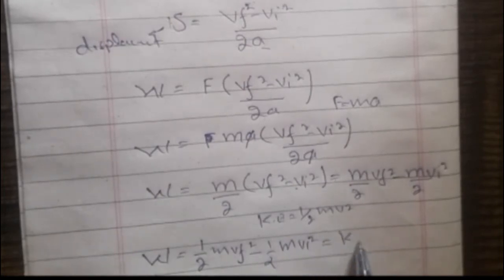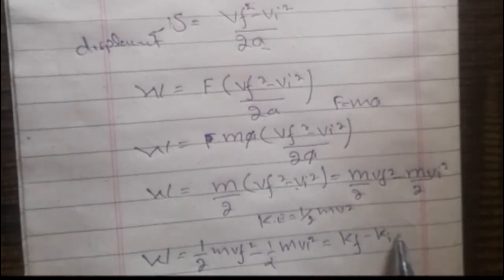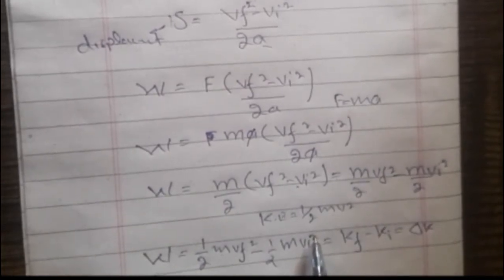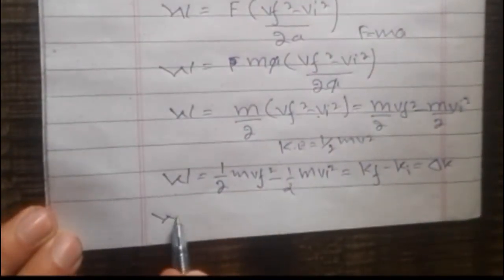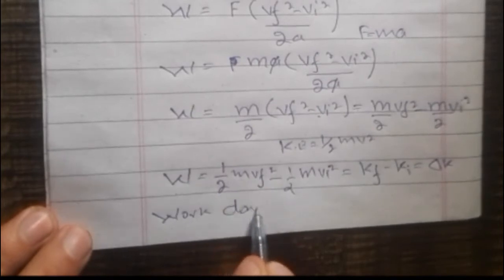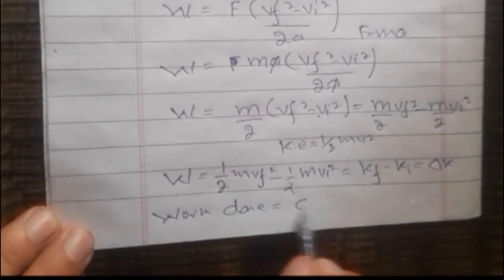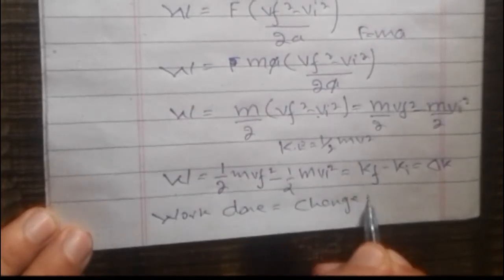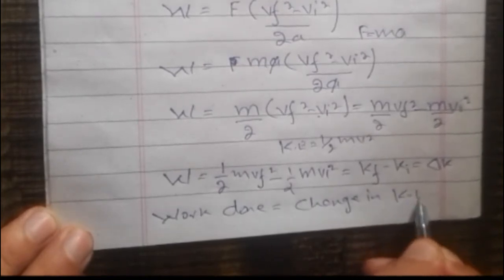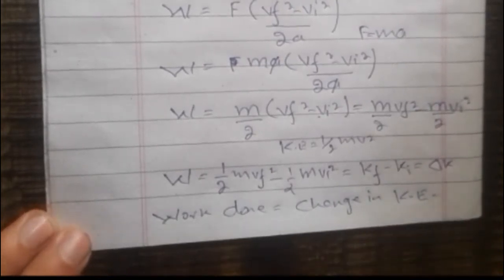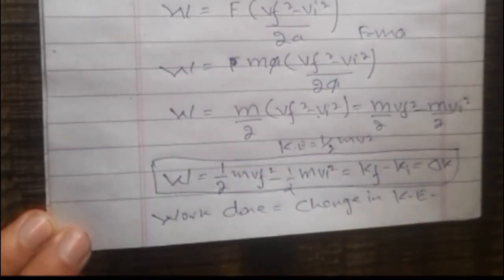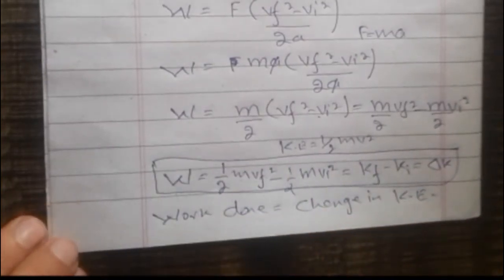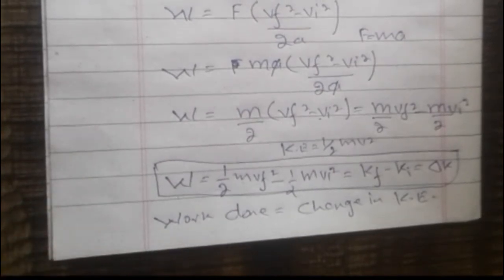Therefore, W = Kf - Ki = ΔK, and hence the work done is equal to the change in kinetic energy, ΔK. Thank you for watching, and don't forget to subscribe for more videos.